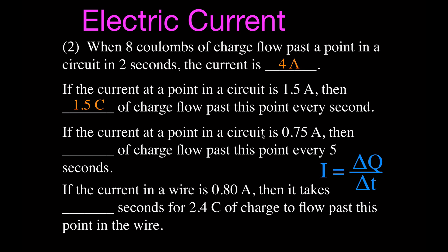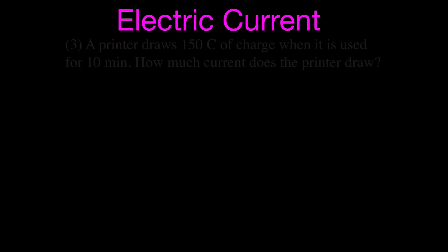If the current is 0.75 amperes — meaning 0.75 coulombs per second — and we want to know how much charge flows past in 5 seconds, we multiply 0.75 by 5 and get 3.75 coulombs of charge every 5 seconds. And if the current in a wire is 0.8 amperes, how long does it take for 2.4 coulombs to flow past a point? Since 0.8 amperes is 0.8 coulombs per second, it will take 3 seconds, because 3 times 0.8 equals 2.4. These problems help build a conceptual understanding of current.